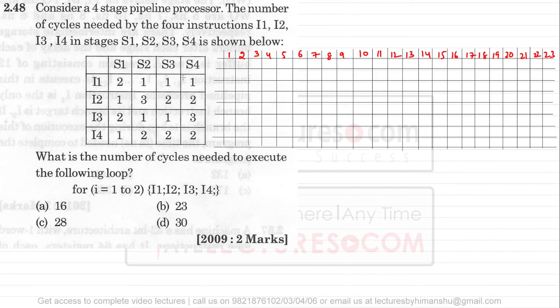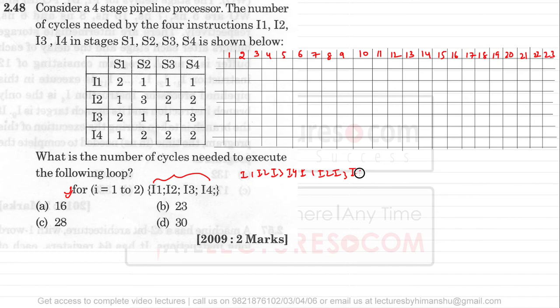The question asks: what is the number of cycles needed to execute the following loop? The loop runs for i equals one to two, executing I1, I2, I3, I4. That means all four instructions are executed one by one, two times total — first I1, I2, I3, I4, then again I1, I2, I3, I4. We need to find the total number of cycles required.